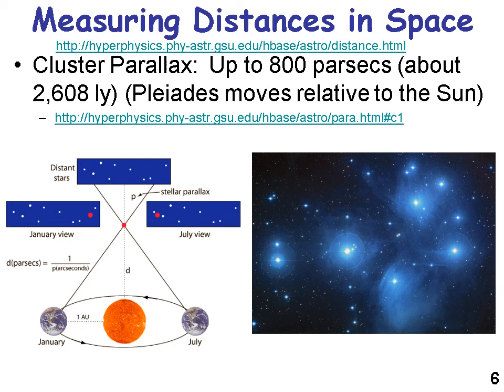Cluster parallax is good up to about just over 2,600 light years. An example is the Pleiades cluster — multiple objects in space that move in relative distance as a group. Because they are multiple objects, they move in relationship to many other objects, allowing you to look further out into space.